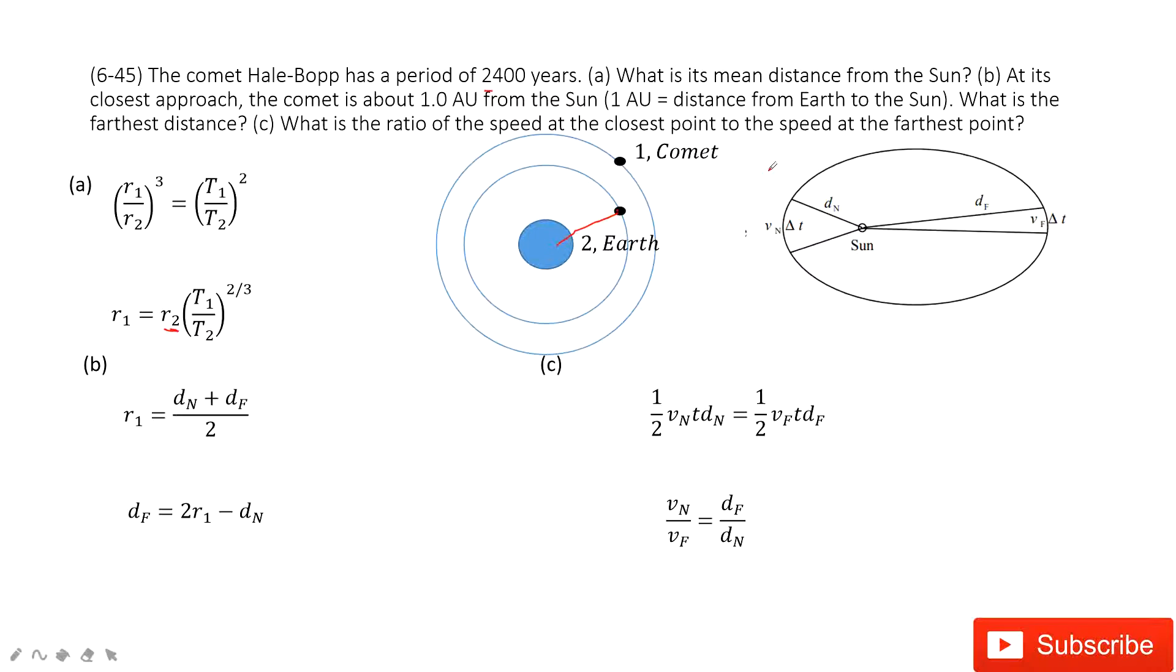The second one asks you, now we consider this model is not a perfect circular motion. It's just to have the nearest point and the farthest point. We can consider the closest approach and then what is the farthest distance. So we consider it looks like this way.